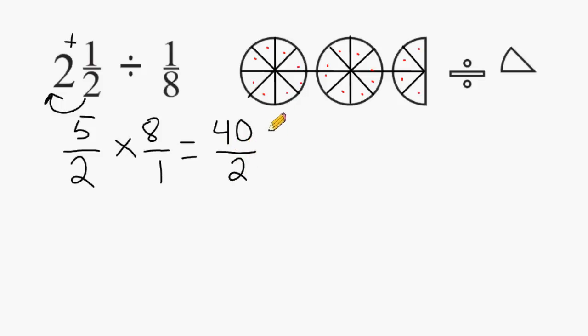Now we have an improper fraction, so we have to simplify this. And we simply start with the numerator and divide it by its denominator. 40 divided by 2 is 20, and that supports our answer that we got with the visual model above.